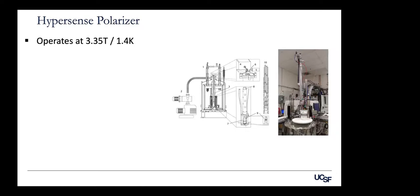There's a question about the microwave source for the Hypersense — what's the frequency bandwidth of that source? I don't know off the top of my head how narrow-band that source is. There has been research into sweeping the microwave frequency during polarization, which has been shown to provide some further increase in build-up. But I don't know the exact bandwidth of those sources off the top of my head.